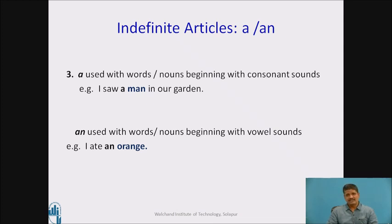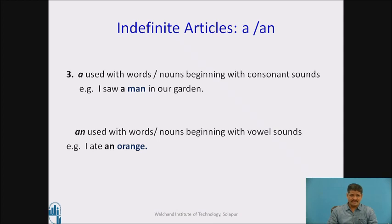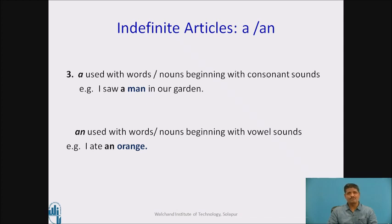'An' is used with words or nouns beginning with vowel sounds. Example: 'I ate an orange.' The word 'orange' has indefinite reference — not particular, not specific — and begins with a vowel sound 'or'. Hence we use indefinite article 'an', because as stated in rule number three, 'an' is used with words or nouns beginning with vowel sounds.